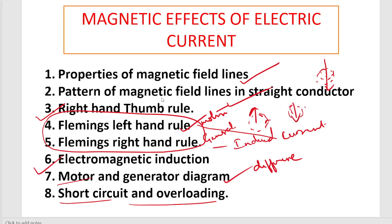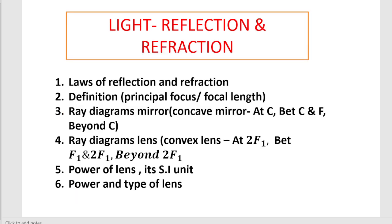That covers the concept-wise questions from Magnetic Effects of Electric Current. Next, coming to Light - Reflection and Refraction. The two laws of reflection and refraction are the most important. The laws of reflection - angle of incidence is equal to angle of reflection - were actually in 8th standard, but they are repeated again.